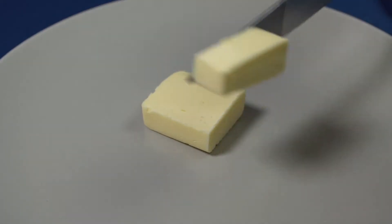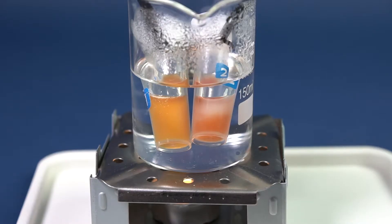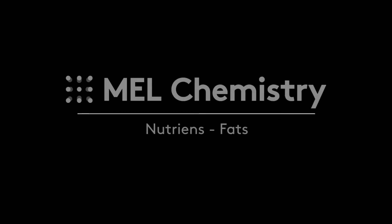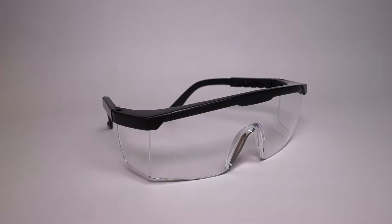Vegetable oil and butter are used in many recipes, and in many cases, they are used to substitute each other. Today, with the help of a nutrition set by MEL Chemistry, we will learn what the difference is between the vegetable oil and butter fats in chemical structure.